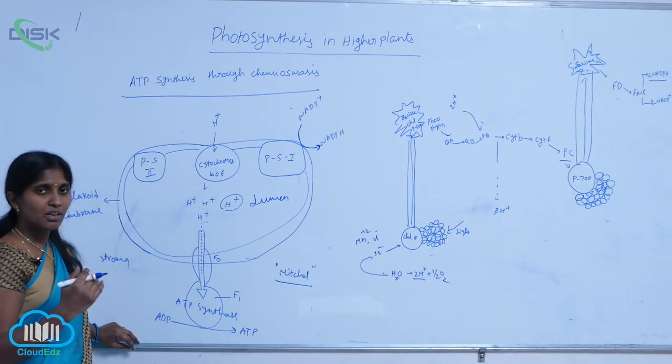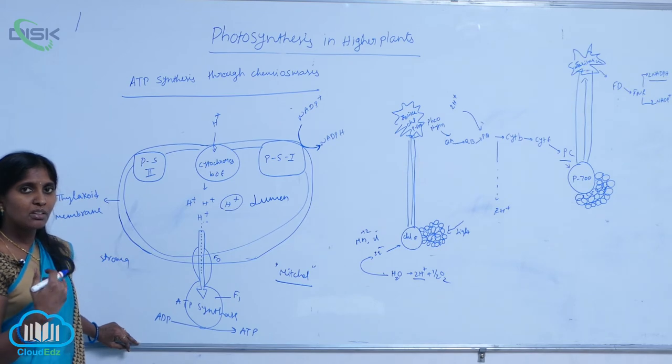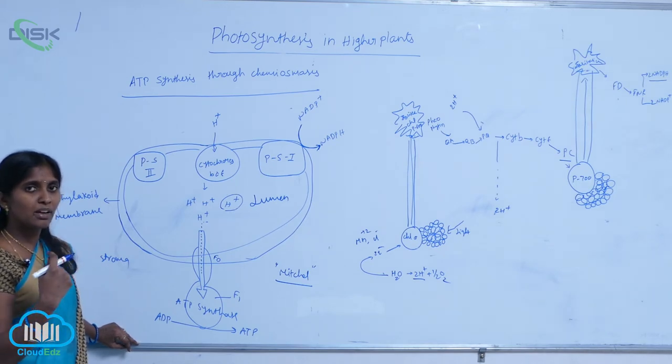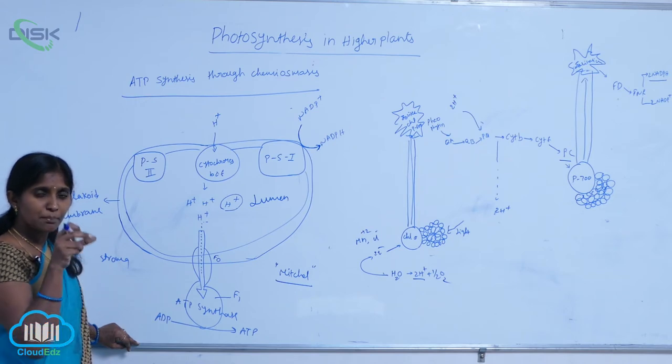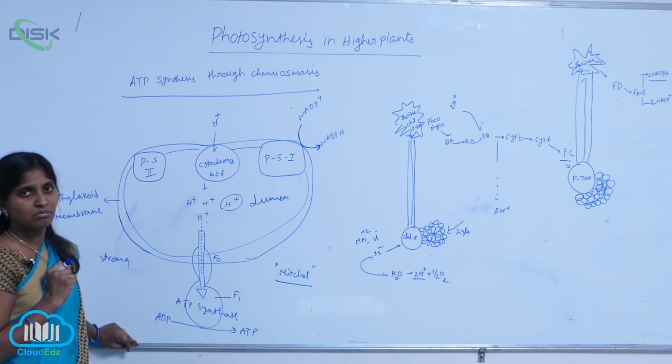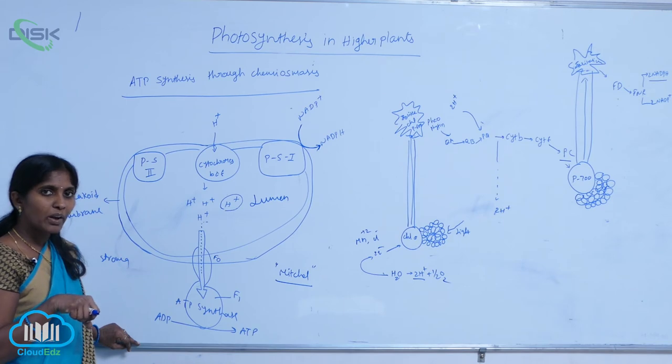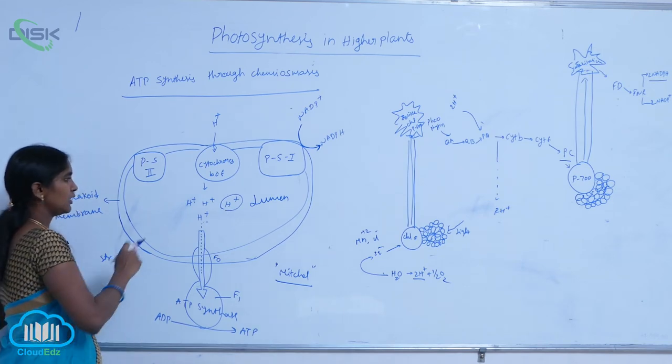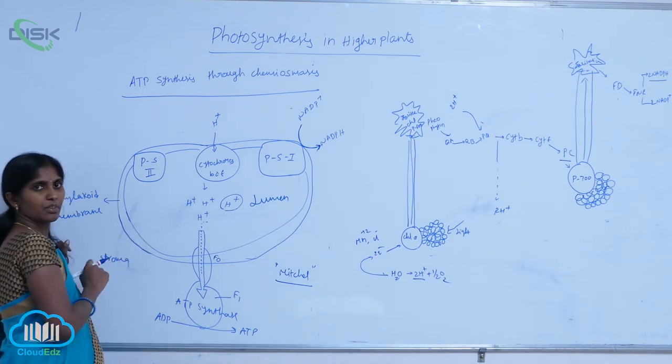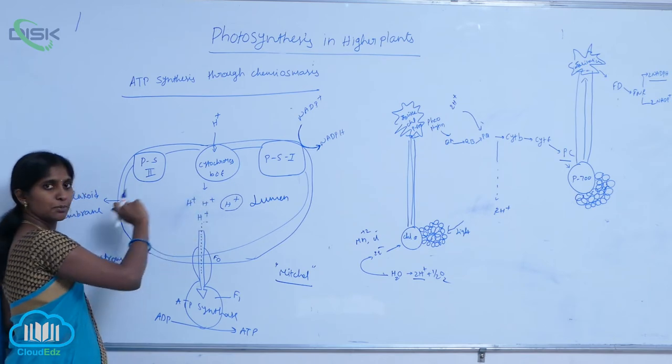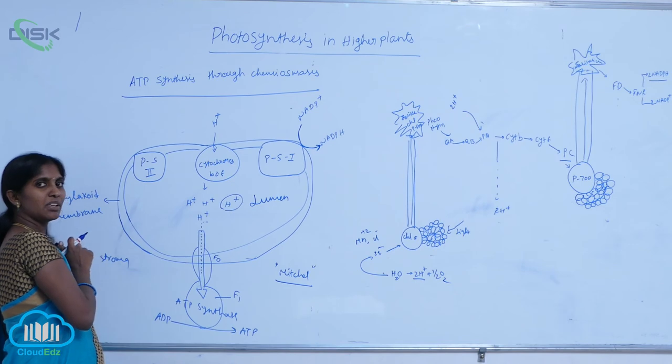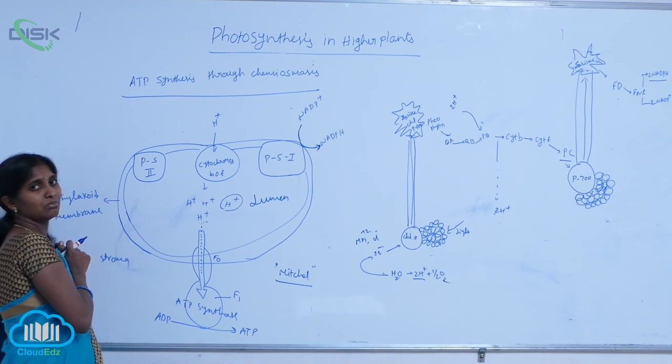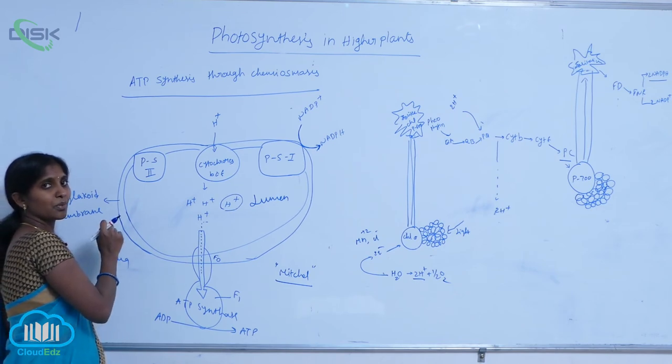To maintain equilibrium of proton concentration between stroma and lumen, a proton pump is needed. Why? Because the pH is increasing due to accumulation of H+ ions, and the thylakoid membrane is impermeable to proton movement.